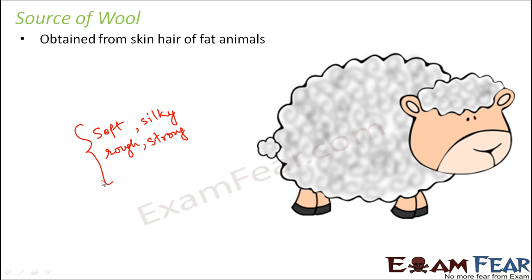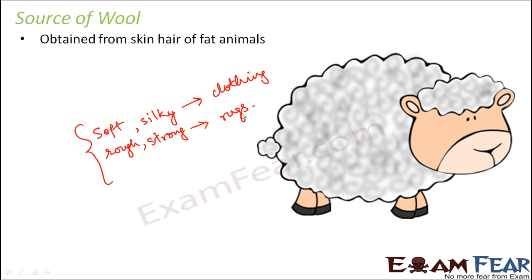Different types of wool are used for different purposes. For example, soft and silky wools can be used for making clothes like sweaters, jackets, and caps, whereas rough and strong wools can be used for making rugs or blankets to cover ourselves.